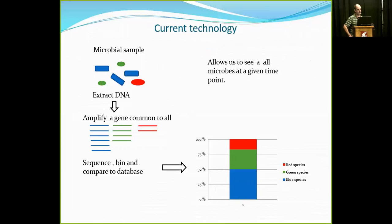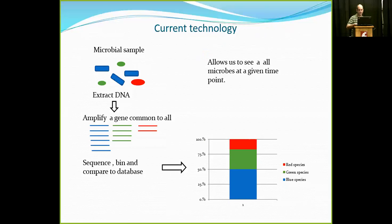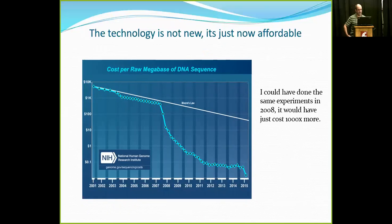Our current technology allows us to see everything at the same time — a big step. We take a microbial sample, extract DNA from the environmental sample, and amplify a gene common to all these organisms. Ideally, the amplified gene will be in the same ratio as the underlying population. So if we have three blue species, two green, and one red, once sequenced they should come back in the final ratio of three blue to two green to one red.